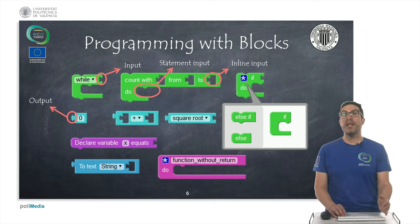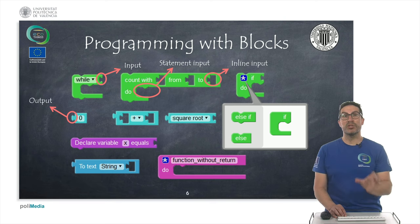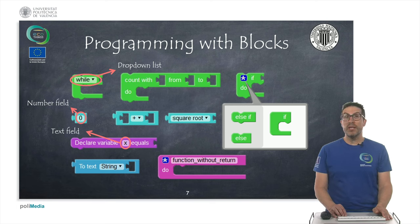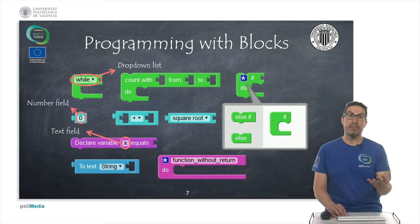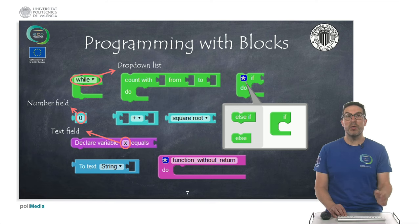Sometimes some instructions have inline input connectors, which means that within the instruction you might include different kinds of inputs as well. And some instructions use the statement input, which is a way to say: I want to use this instruction, but within it I would like to use additional instructions that can be connected through the previous and next connectors as we saw before. Some instructions include a dropdown list which makes variations of the same instruction, allowing you to select different kinds of features within the same idea. Other instructions include a field number or a text field that allows you to change the field accordingly to what you need, like a number or the name of a variable.